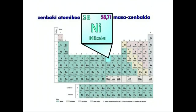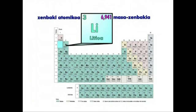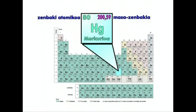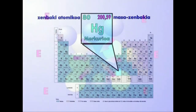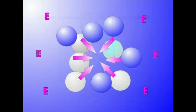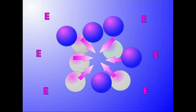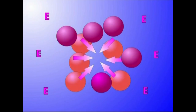Denetan egonkorrenak masa zenbakia hirurogeiko dutenak dira. Hori baino masa zenbaki txikiagokoak fusionatzen direnean eta masa zenbaki handiago erradioaktiboak fisionatzen direnean, energia askatu egiten da. Horiek dira, beraz, nukleoen lotura energiaz baliatzeko aukera ematen dutenak.